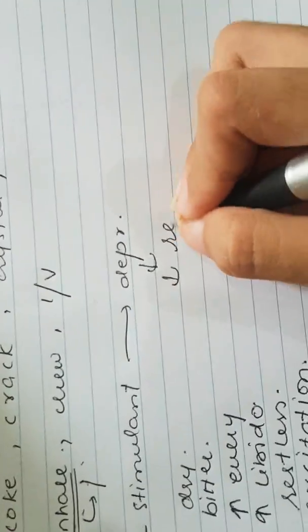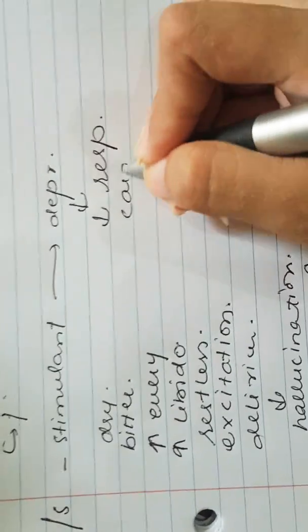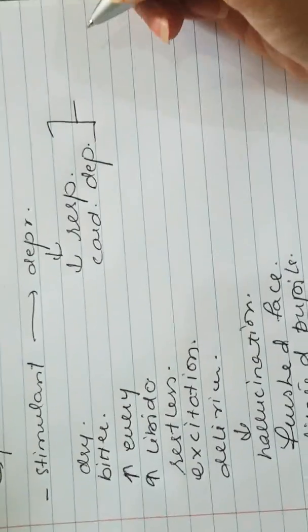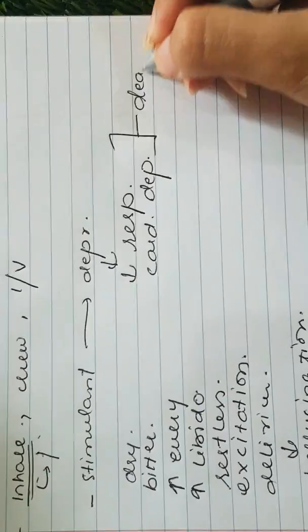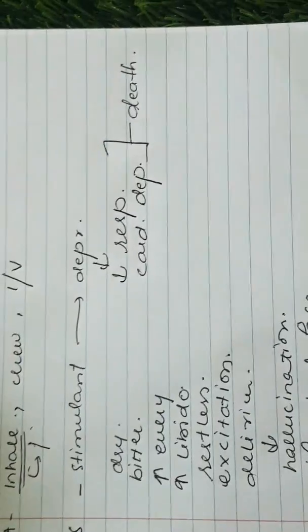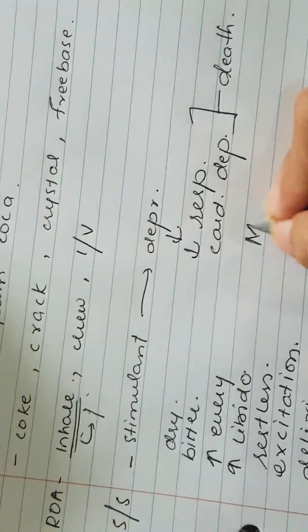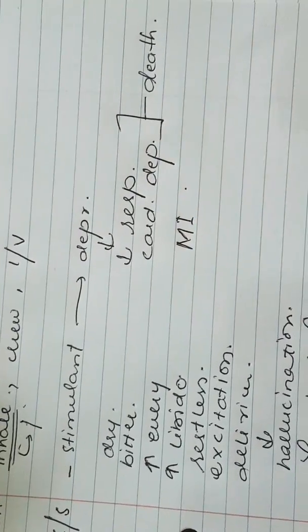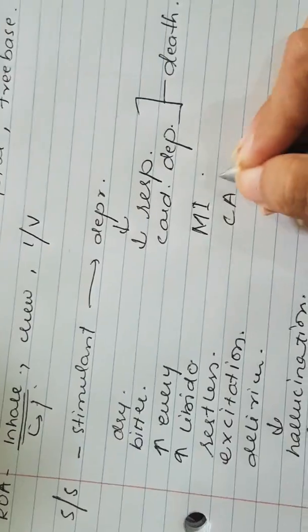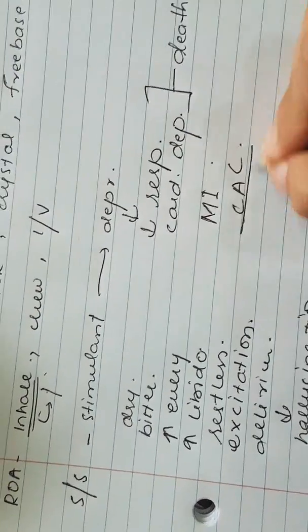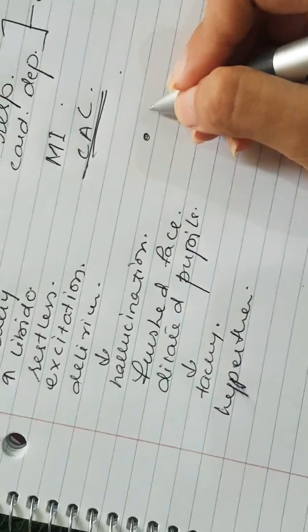The stage of depression may include feeble respiration and cardiac depression. Cardiopulmonary depression leads to death — these are the terminal events. It can also lead to MI and coronary artery constriction.